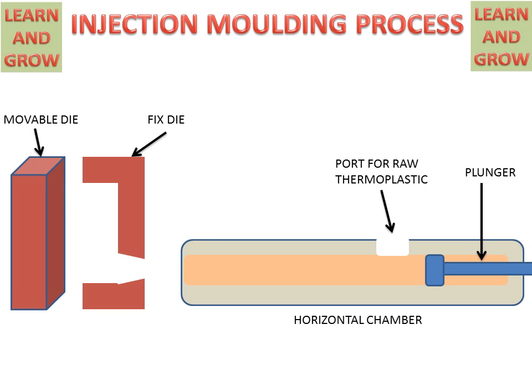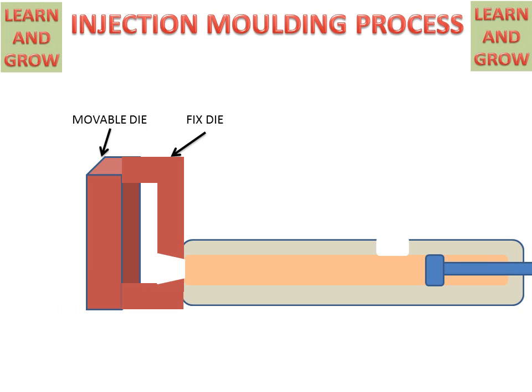Now if we attach all these parts of the injection molding together, this is what it will look like. The movable die and fixed die are fixed to the inlet of the molten metal.